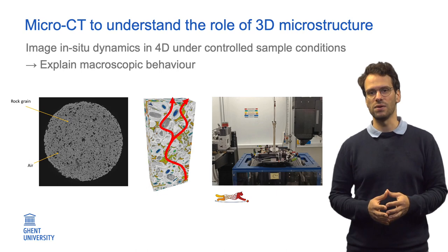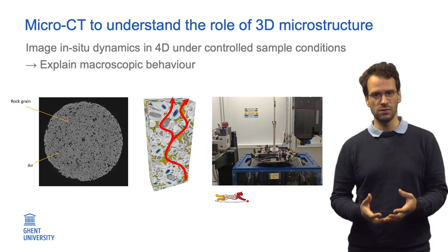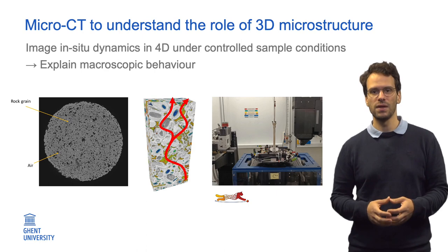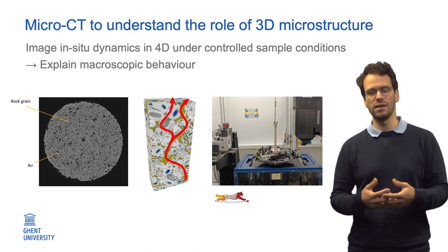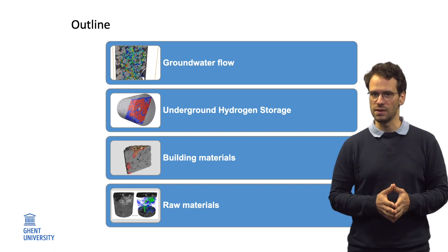This is why we are so closely involved with the UGCT core facility. MicroCT is the perfect tool to study the role of 3D microstructure of the materials, and going a step further, to visualize dynamic processes while they are taking place. To do this, we collaborate with the other groups in UGCT to come up with new microCT methods and to apply them in novel experiments. We will present some experiments that serve as illustrations for this.